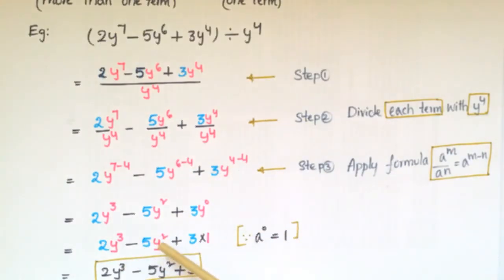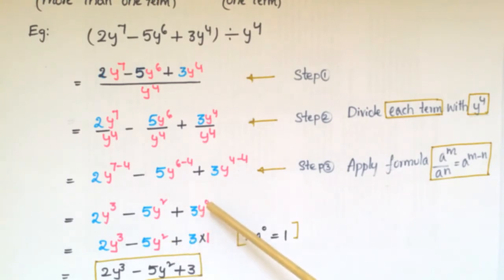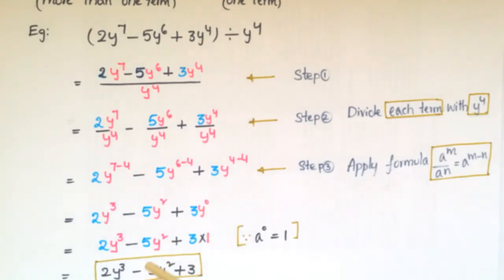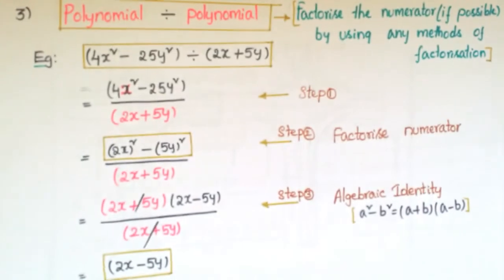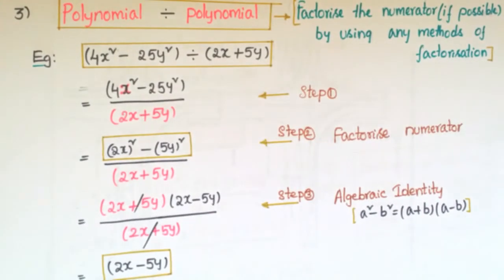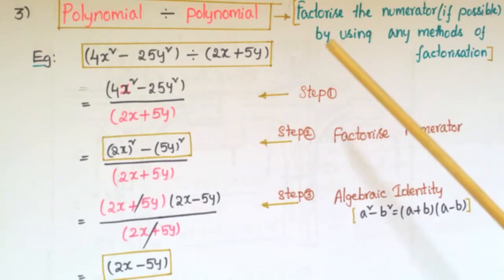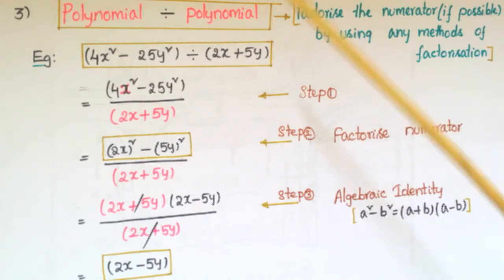Since y⁰ = 1, we get 2y³ − 5y² + 3×1, which equals 2y³ − 5y² + 3. Next, we look at division of a polynomial by another polynomial.